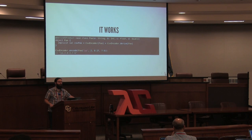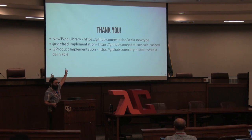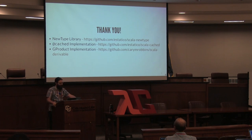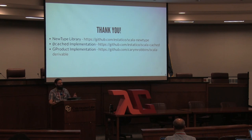Overall, this is a way to use something like Shapeless's HList for generic derivation without incurring runtime overhead. We get the same functionality; the only thing missing is direct `.head` and `.tail` field access, but we can fix that with zero-cost extension methods (so long as they extend `Any`). Links to the newtype library, the `cached` macro implementation, and the GProduct implementation are provided in the slides.